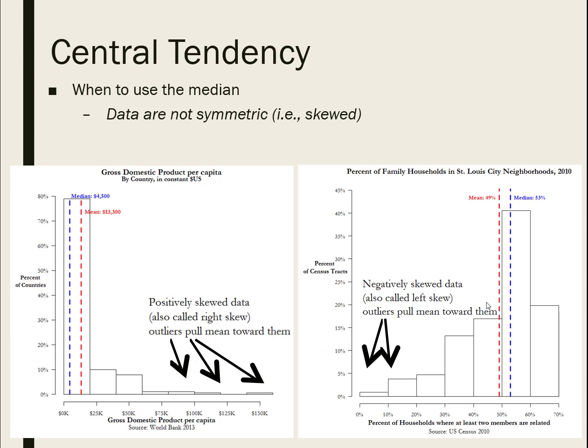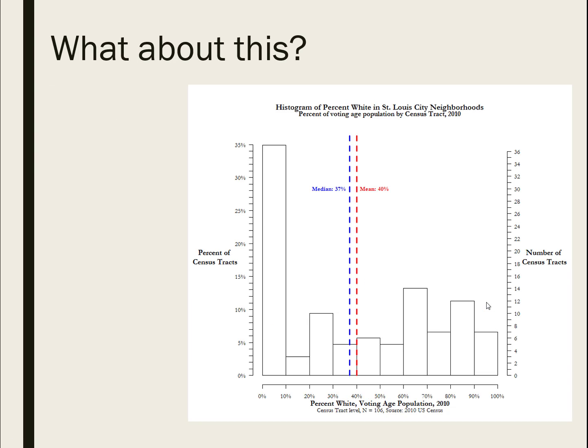If you want to give a truer impression of where the actual middle is, use the median. Even though both the median and the mean are technically in the tallest bin, the difference between $4,500 and $13,000 is meaningful. You don't want to mislead your audience with where the true middle of the data lies.